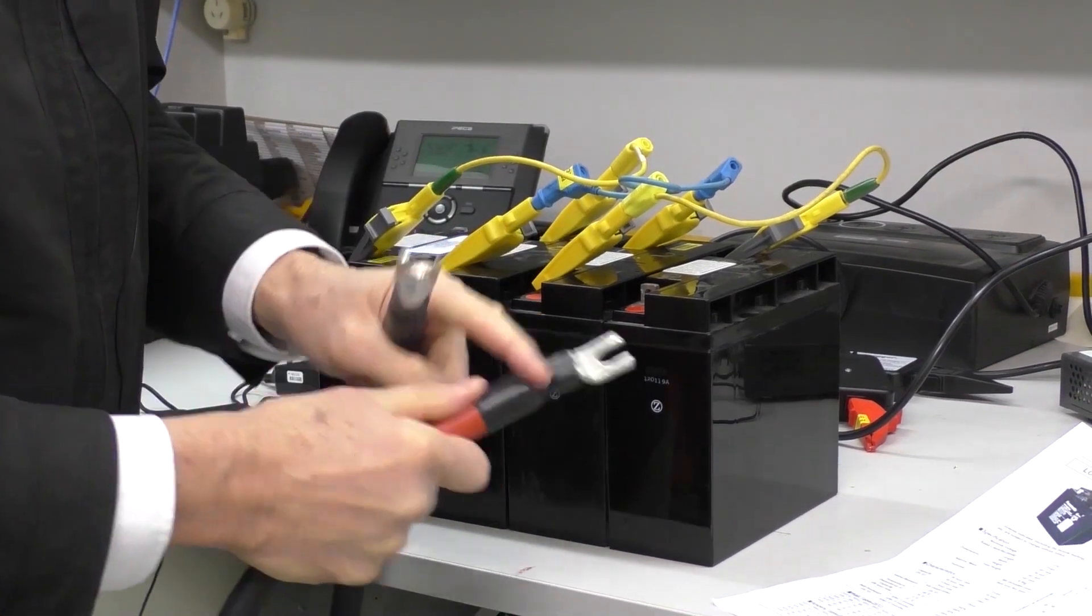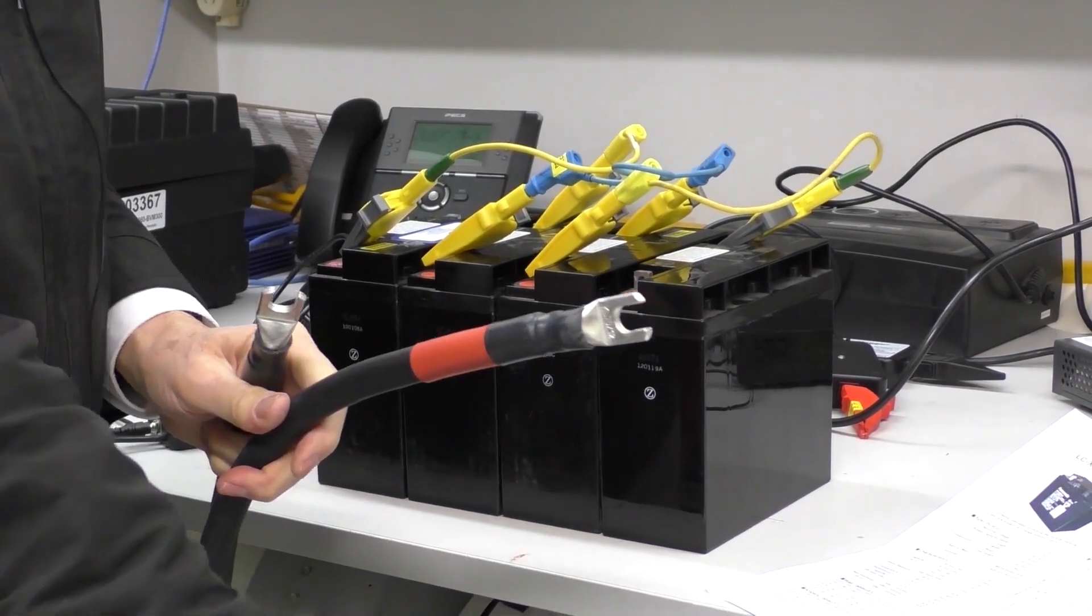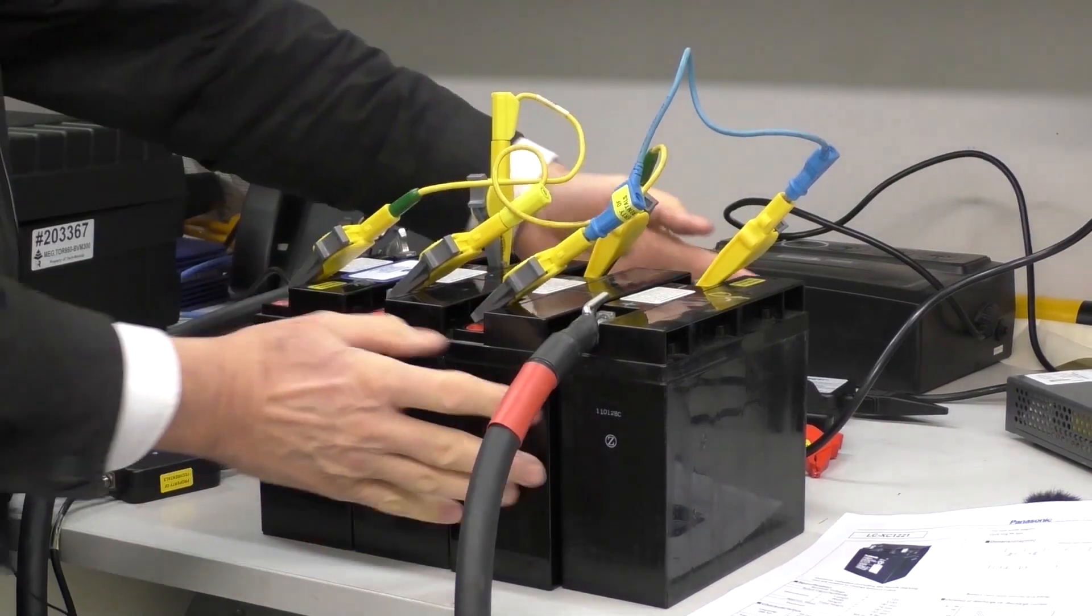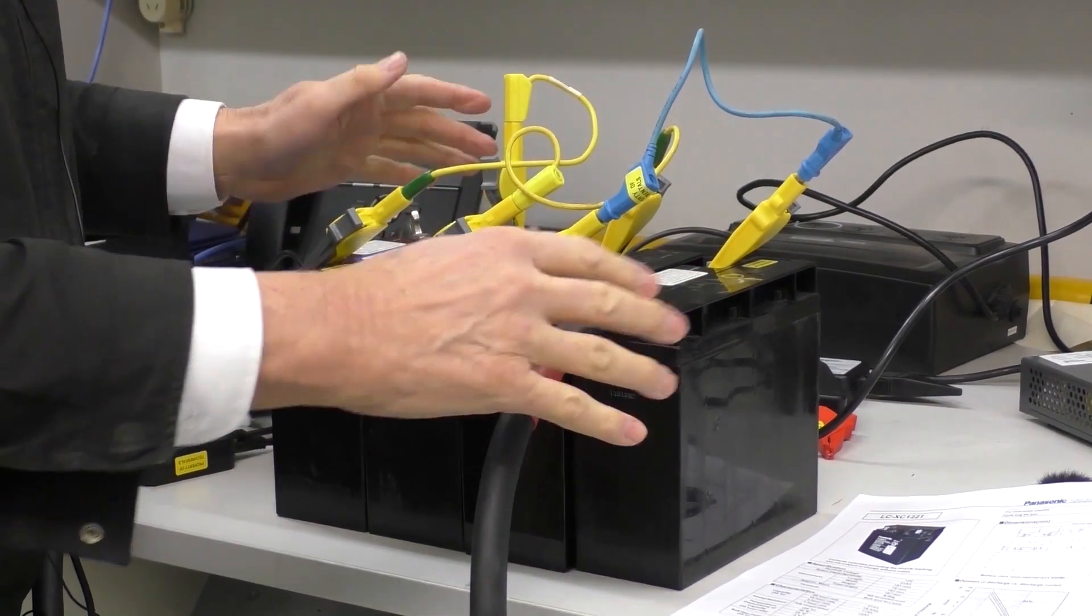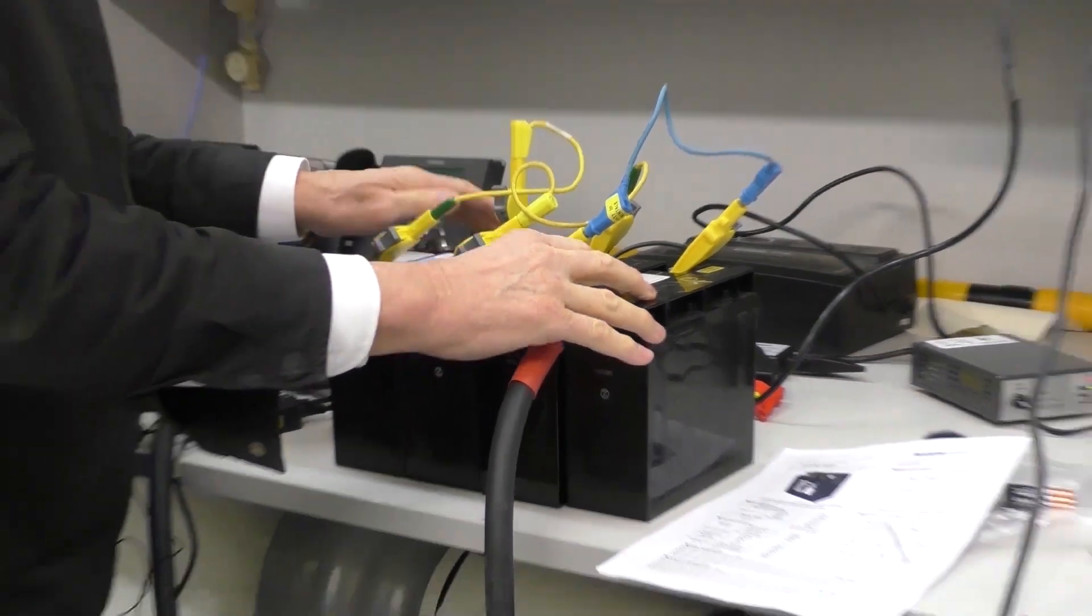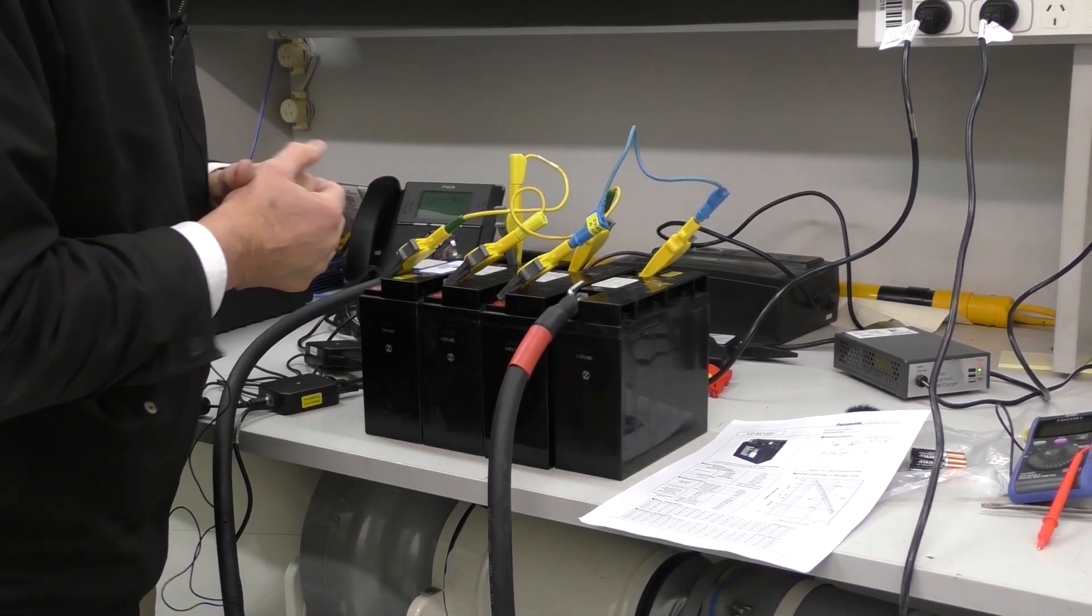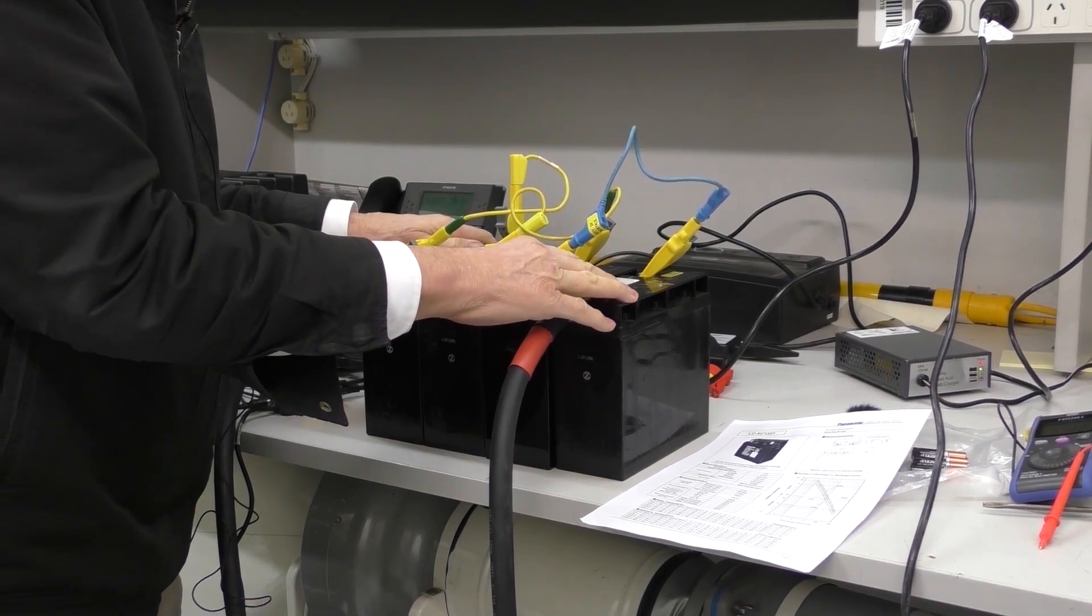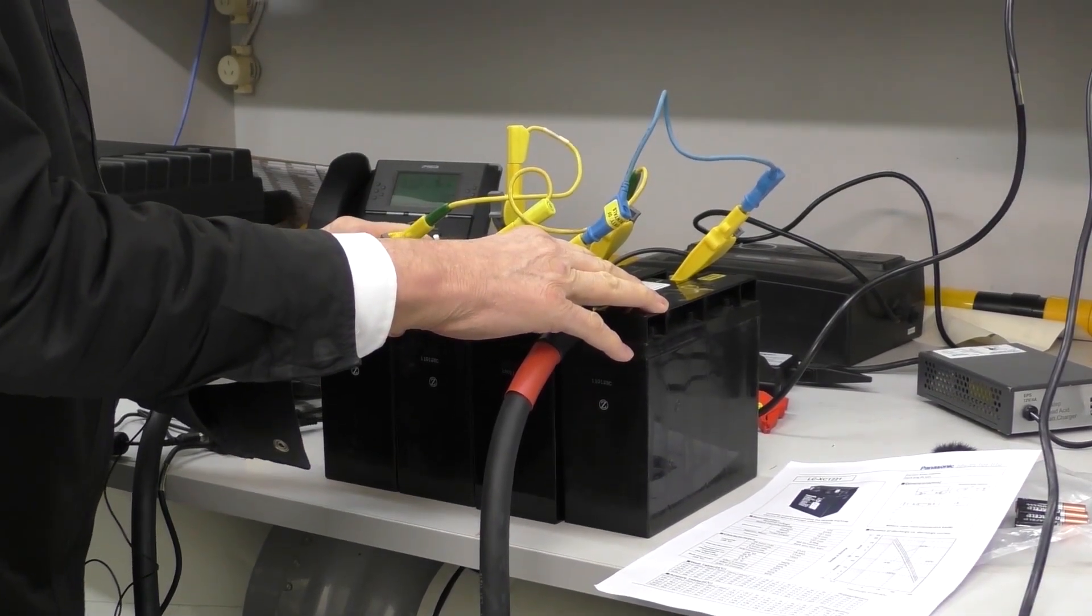I'm going to now connect these leads up to the Torkel and now I'm going to connect them up to the battery. Here's my battery bank, I've connected the leads up here to draw the current from them. Now I also need to connect a few other leads. We have remote sensing on the voltage measurements and we can also measure the voltage on each cell.